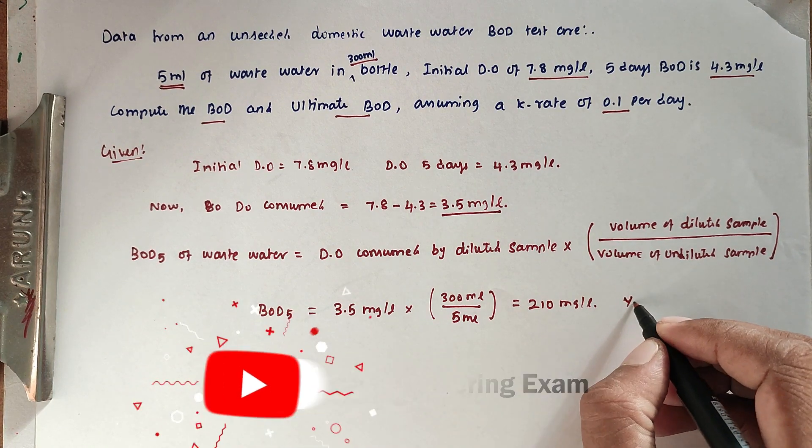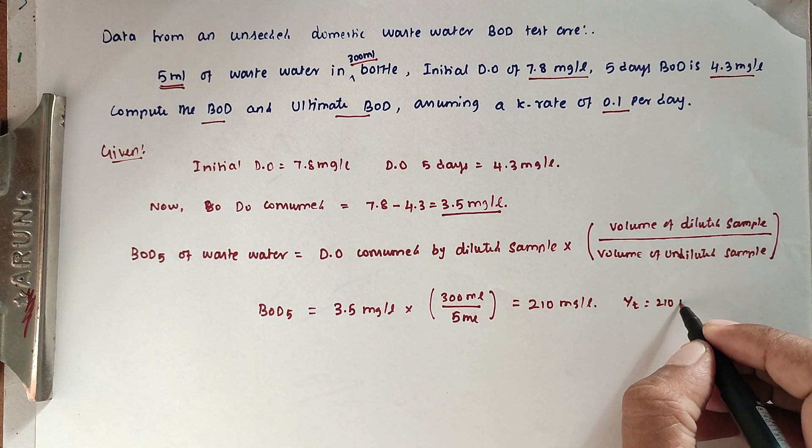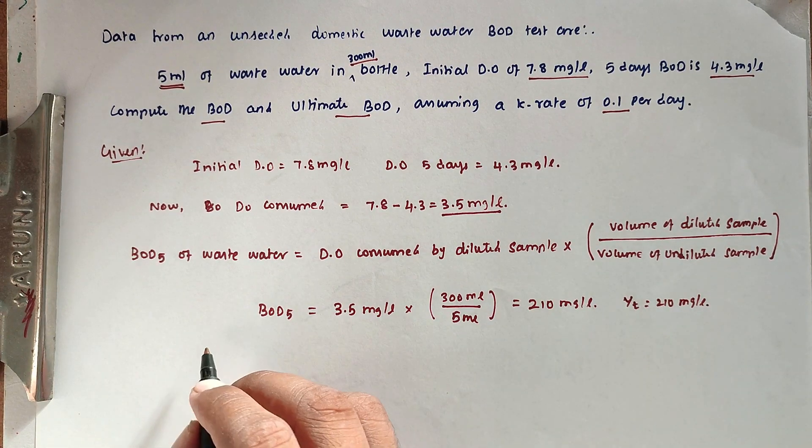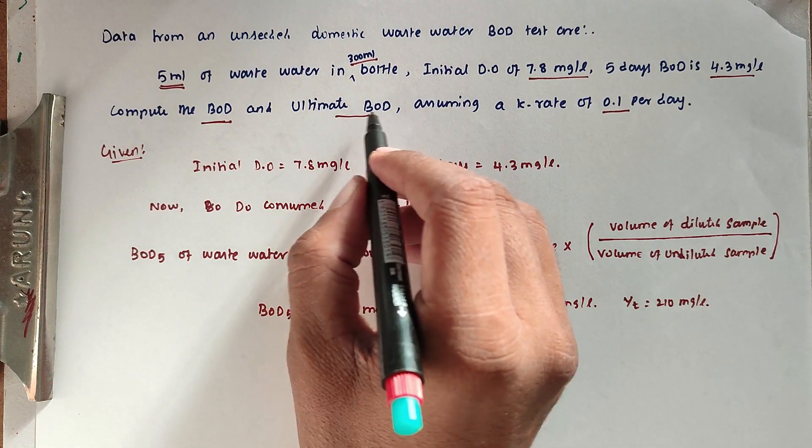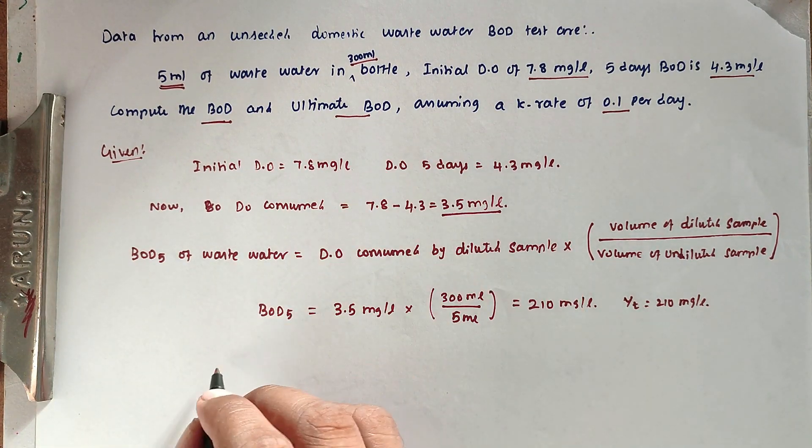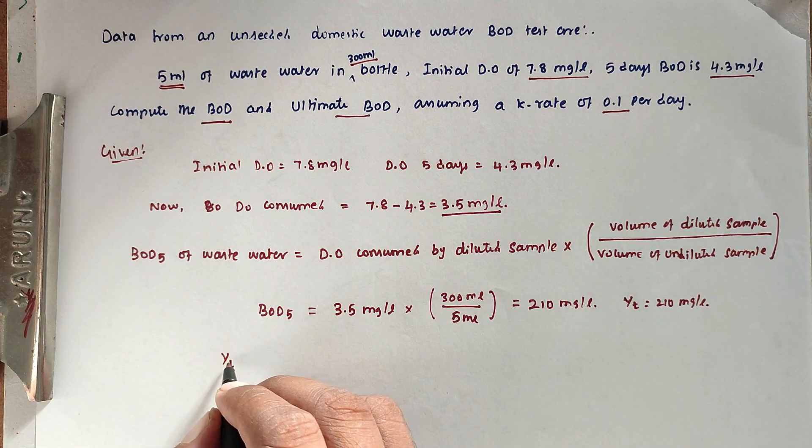So BOD5, which is Yt, equals 210 mg/L - that's the first answer. For the second question, ultimate BOD, we use the relationship: Yt = L × (1 - 10^(-kt)).